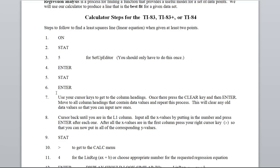So use your cursor keys to get to the column headings once they're pressed clear and then enter. Move to all column headings that contain data values and repeat this process which should be column 1 and column 2. This will clear any old data values so that you can input new ones. Cursor back until you are in the L1 column and this is where all your x values go. You put in the number. Press enter after each one. After all the x values are in the first column press your right cursor key so now you can put in all the corresponding y values.